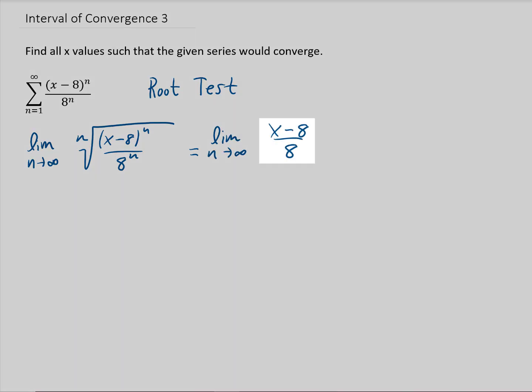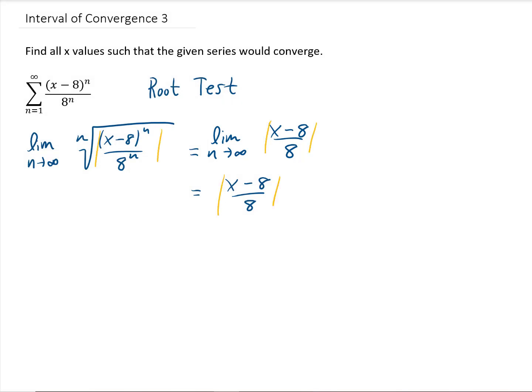And you'll notice that there are no n's in this expression. So when we take the limit as n goes to infinity, we just get x minus 8 over 8. Now with the root test, there is actually an absolute value on this. And the root test says that if this result is less than 1, then our series converges.